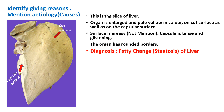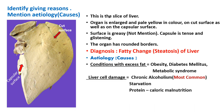Steatosis is further classified as microvesicular steatosis or macrovesicular steatosis. If hepatocytes show a single large vacuole, it is macrosteatosis. Microvesicular steatosis means the cytoplasm shows multiple small vacuoles in the hepatocytes. The causes of fatty change can be divided into two groups: conditions associated with excess fat in the body, including obesity, diabetes mellitus, and metabolic syndrome; and conditions causing liver cell damage leading to fat accumulation.